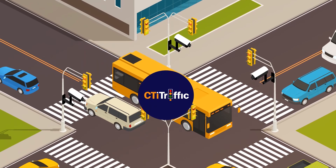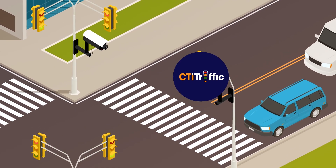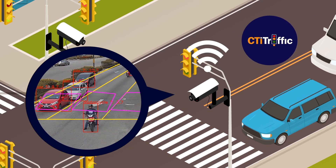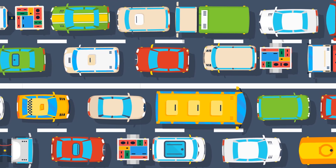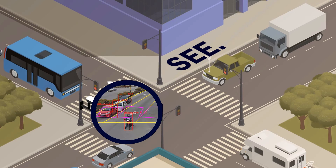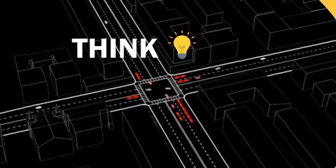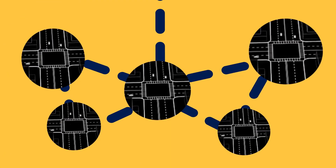City Traffic is a multi-junction AI solution to manage, automate, and improve the performance of your city's traffic junctions. City Traffic overcomes traffic problems by giving your traffic junctions the ability to see, visualize, think, decide, and work with one another.